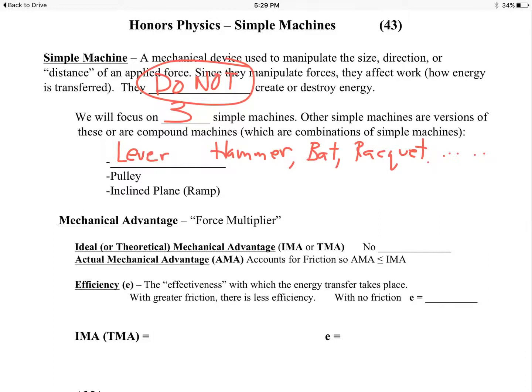One of the big concepts with simple machines is what we call mechanical advantage, the force multiplier. There's what's called an ideal or theoretical mechanical advantage, IMA or TMA. In this case, there is no friction considered or factored in. Then there's the actual mechanical advantage, which accounts for friction. We'll always end up with the actual mechanical advantage being less than or equal to the ideal mechanical advantage. The efficiency is the effectiveness with which energy is transferred. With greater friction, there's less efficiency. When there's no friction, the efficiency will always equal 100%.